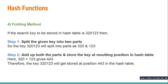The next function is the folding method. If the search key to be stored in the hash table is 320123, first we split the given key into two parts: 320 and 123. Then we add up both parts — 320 plus 123 equals 443 — and store the key at the resulting position 443 in the hash table. Thank you for watching.